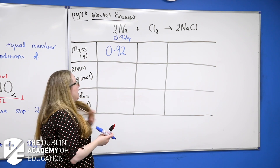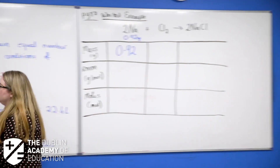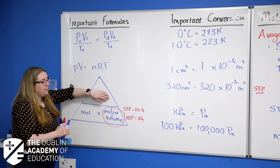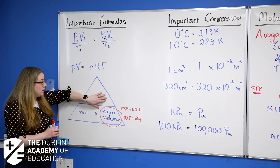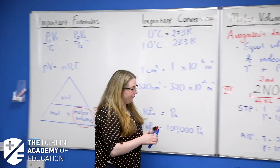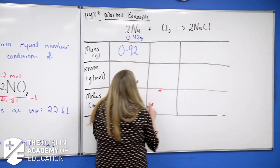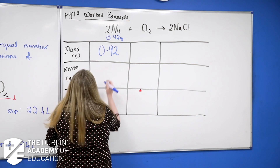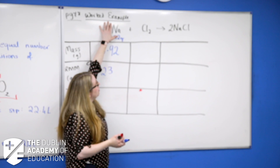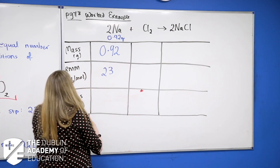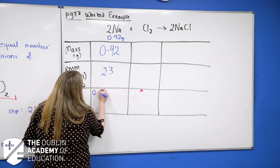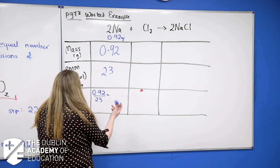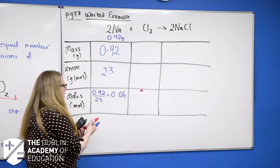From the triangle, I want the volume of chlorine, so I need to find the number of moles first, then multiply by the molar volume — at RTP that's 24 litres per mole. Step one: find the moles of sodium. The RMM of sodium is 23 — remember you never multiply by the number in front; that's accounted for in the moles row. Moles = mass ÷ RMM = 0.92 ÷ 23 = 0.04 moles. That gets 3 marks.